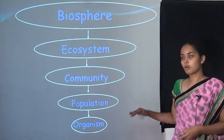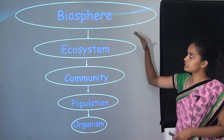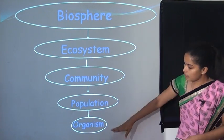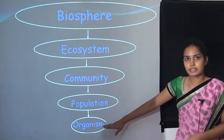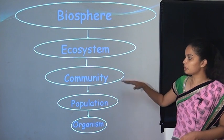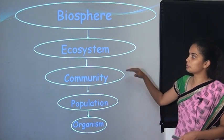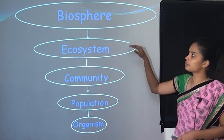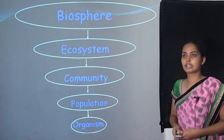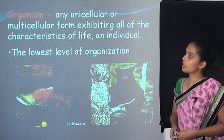The whole of ecology is divided like this: the organism is the least class, then comes the population, then the community, then the ecosystem, and then the biosphere. We will learn each in detail.